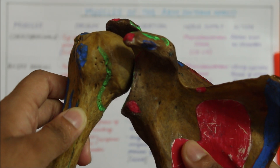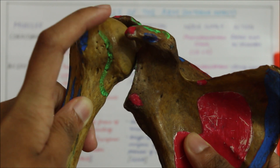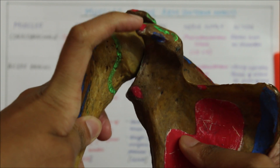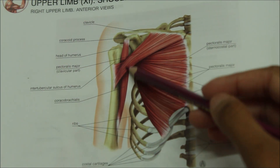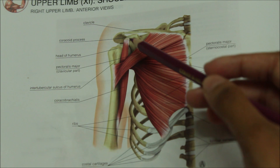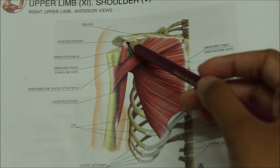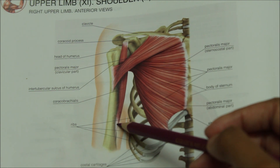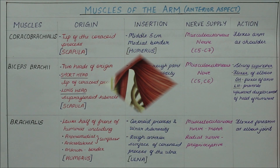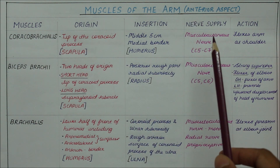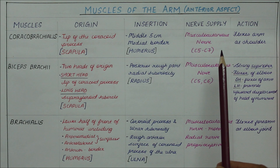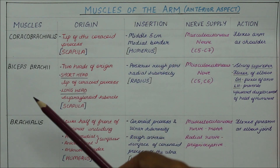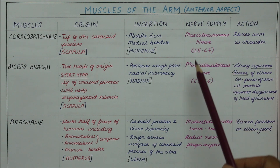As a whole, the coracobrachialis originates from the tip of the coracoid process and inserts into the middle 5 centimeters of the medial border of the humerus. Moving on to the nerve supply, the coracobrachialis is supplied by the musculocutaneous nerve. All three muscles of the anterior aspect of the arm are supplied by the musculocutaneous nerve.